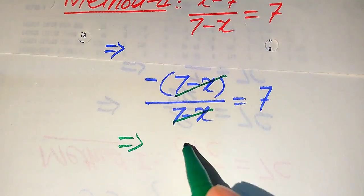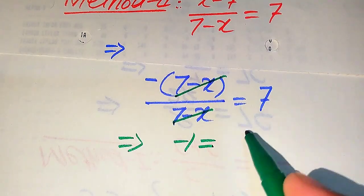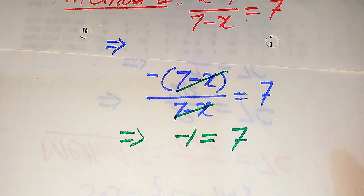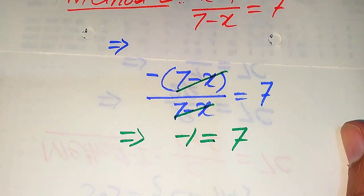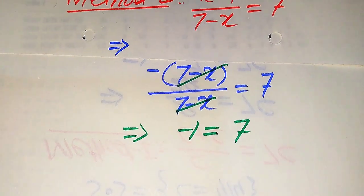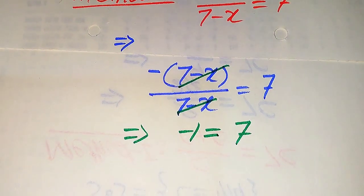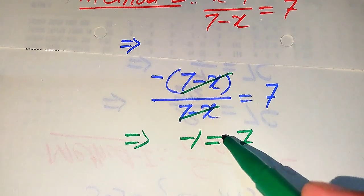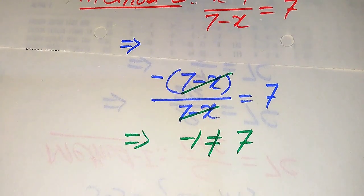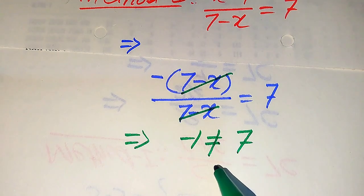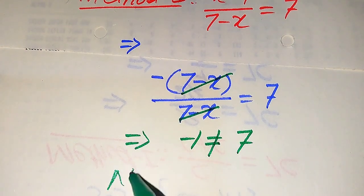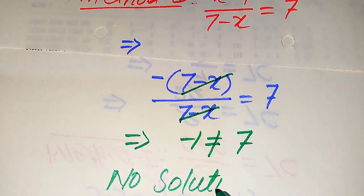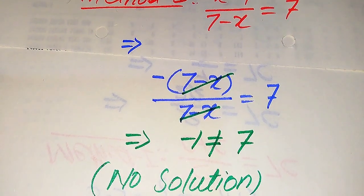Now you can see that 7 minus x in the numerator is cancelled by 7 minus x in the denominator, leaving us with negative 1 equals 7. Since negative 1 does not equal 7, this is a contradiction. This means we cannot get any value of x, and therefore this equation has no solution.